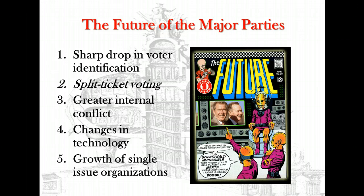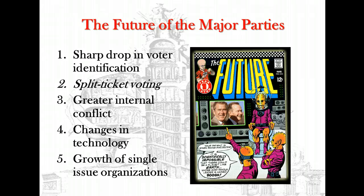The present weakened state of the parties can be traced to several factors. One, a sharp drop in the number of voters willing to identify themselves as Republican or Democrat, and a growing number who regard themselves as independents. Two, a big increase in split-ticket voting — voting for candidates of different parties for different offices at the same election. Three, various structural changes and reforms that have made the parties more open but have also led to greater internal conflict and disorganization, ranging from the introduction of the direct primary in the early 1900s to recent changes in campaign finance laws. Four, changes in the technology of campaigning — especially the heavy use of television and the internet, professional campaign managers, and direct mail advertising — which have made candidates much less dependent on party organizations since they can now speak directly to the electorate.